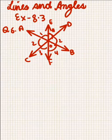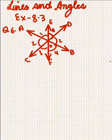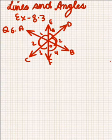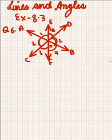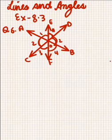I have to prove that OF bisects the vertically opposite angles. These are the angles which have to be proven equal — angle 3 and angle 4. So now, how do we prove that?